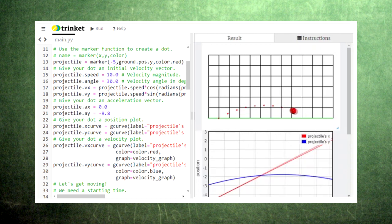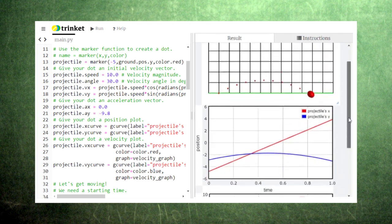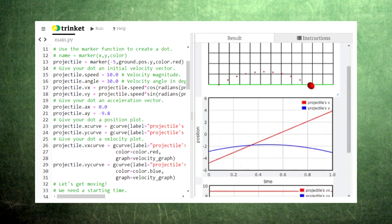The position graph matches this behavior, with the x component of the position moving steadily at a constant velocity and the y component reaching a maximum and then turning around.